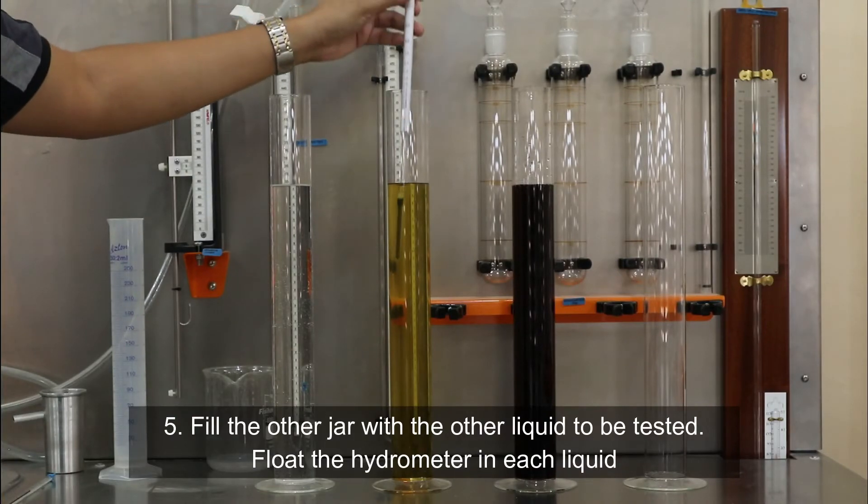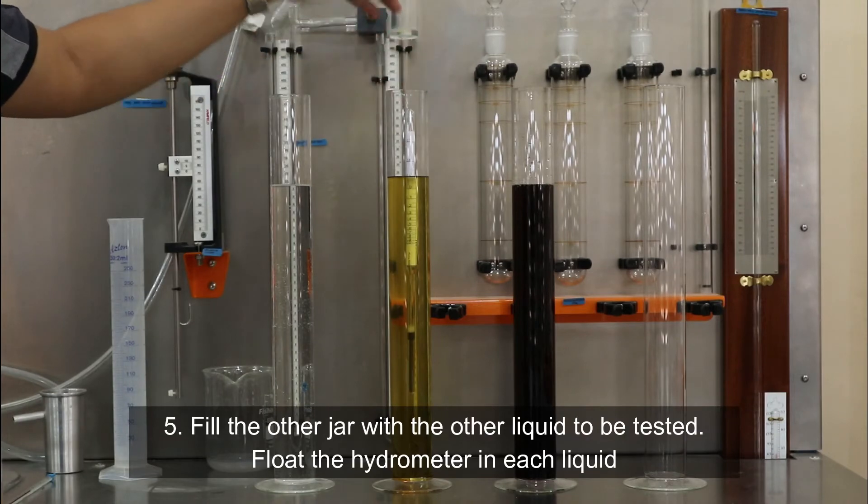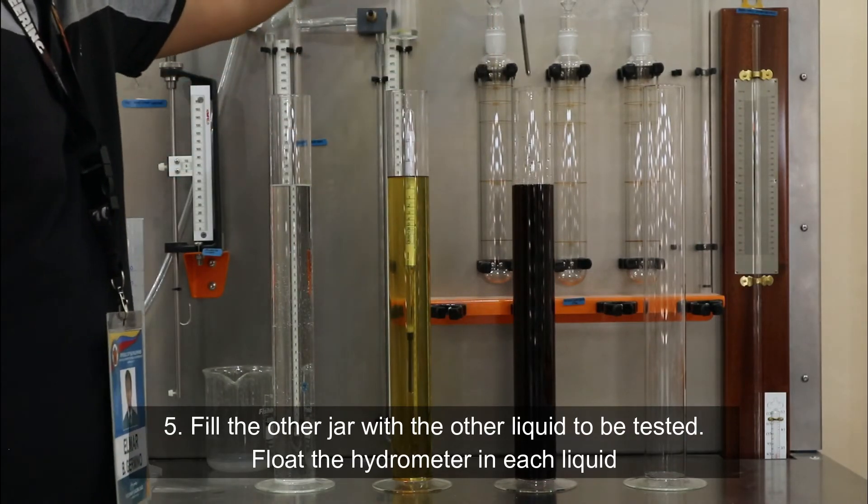Fifth, fill the other jar with the other liquid to be tested. Then, float the hydrometer in each liquid.